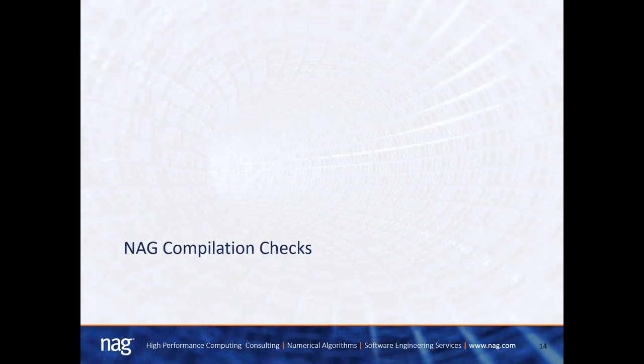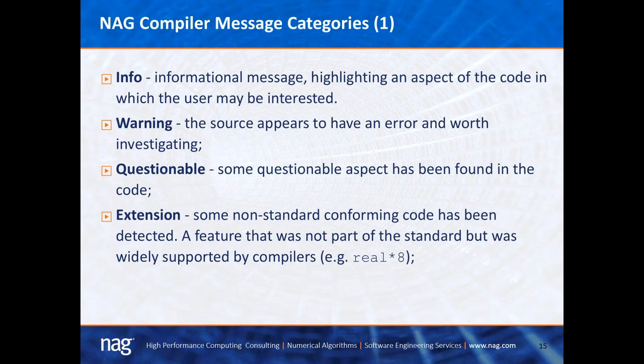The NAG compiler does a number of compilation checks falling into different categories. The first is an informational message, which highlights an aspect of the code the developer might be interested in — for example, an expression in a logical if is a constant. The next category is a warning, where the source appears to have an error worth investigating — for example, a do loop having a zero iteration count, or a local variable is initialized but not used. Then there's a questionable category — for example, using the CMPLX intrinsic function with double precision arguments and no kind argument, which will return a single precision result.